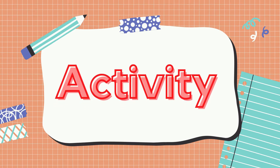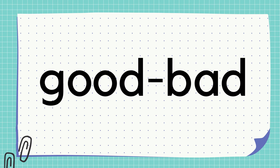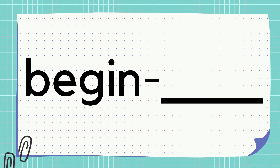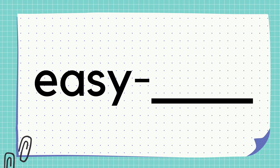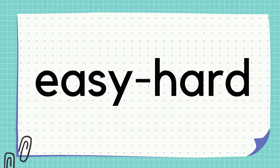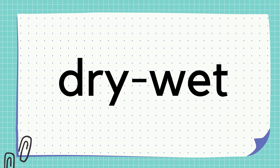This time, try to find the antonyms of the following words. What is the antonym of good? Good is bad. How about begin? Really nice! The answer is end. Next, what is the antonym of easy? Outstanding! It is hard. What about the antonym of dry? Fantastic! Wet is the antonym of dry.